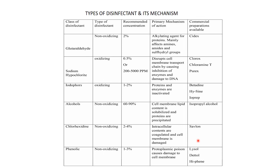Phenols are non-oxidizing; one to three percent concentration is recommended. As protoplasmic poisons, they cause damage to the cell membrane. Common examples include Lysol and Dettol, which are very commonly used.